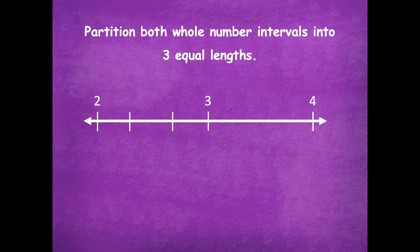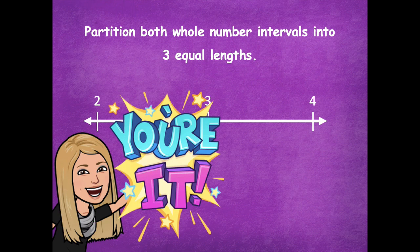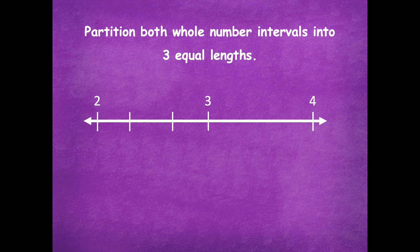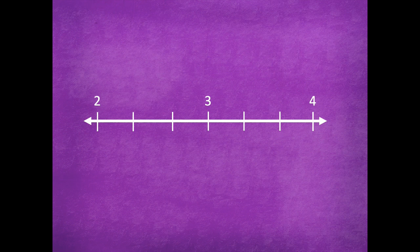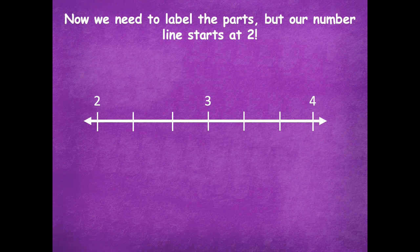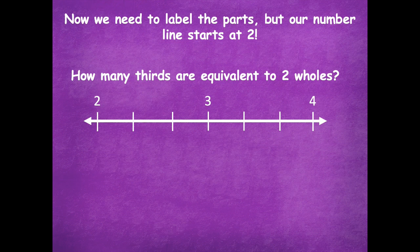I did the first interval for you. Now you're going to do the same between three and four into three equal parts. Pause the video, do that, and then click play when you're ready for the next step. Here's between three and four split into three equal lengths. Now I need to label the parts, but our number line starts at two, not one or zero. So how many thirds are equivalent to two wholes?